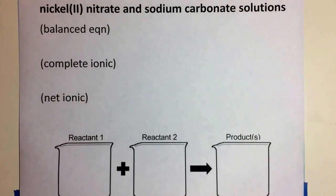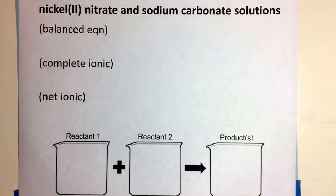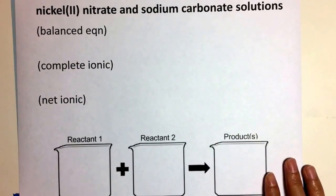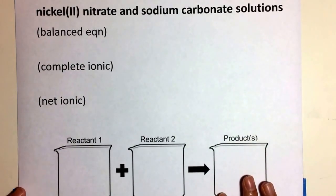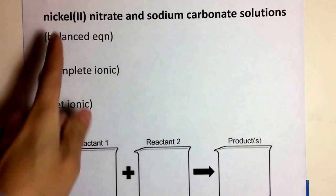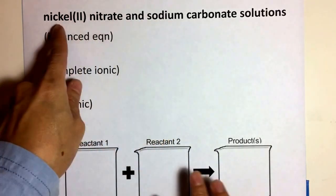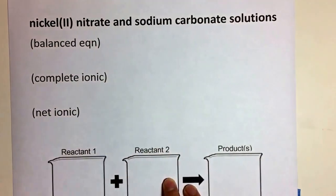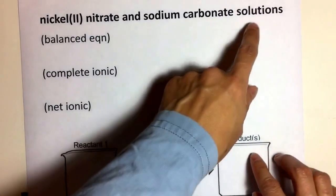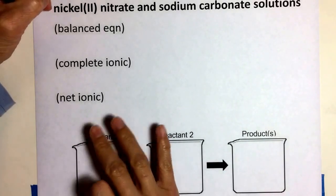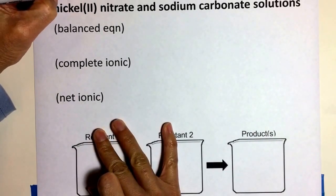Our example is nickel two nitrate and sodium carbonate solutions mixed together. The first thing I want to do is figure out all the ions that are in each of those ionic compounds. Ionic compounds are made up of metals and non-metals. So these are solutions of those ionic compounds. Start off by writing out all the ions.